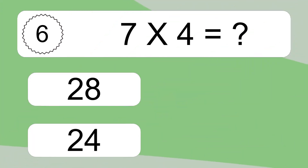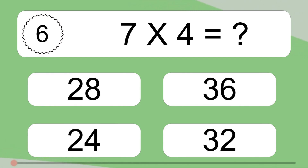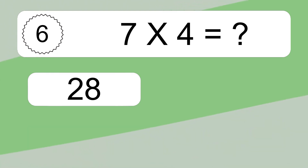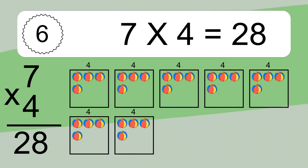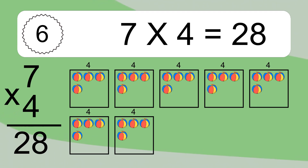7 times 4 equals what? 7 times 4 equals 28. We have 7 boxes, and each box has 4 colorful balls inside. If you count all the balls in all the boxes together, you will have 7 times 4 balls. This equals 28 balls.